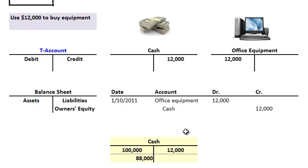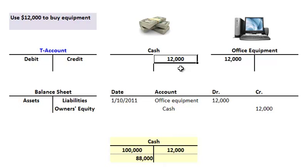Let's go forward with another example. We're going to use $12,000 of that $100,000 to buy some equipment so we can make books. Cash is involved — we're going to pay cash for our equipment. But this time we're spending cash, so it's going to be a reduction of cash, and therefore we're going to credit cash. But what do we get? We're going to get some office equipment, which is also an asset. So we're increasing that asset, and we're going to debit our office equipment account.